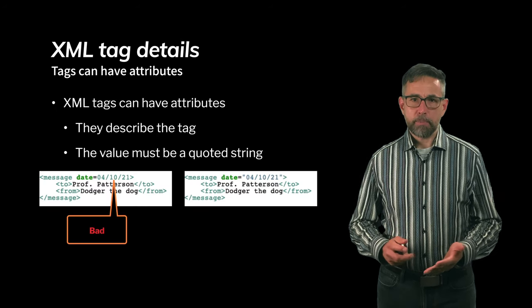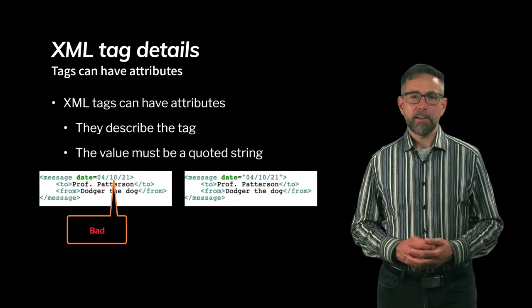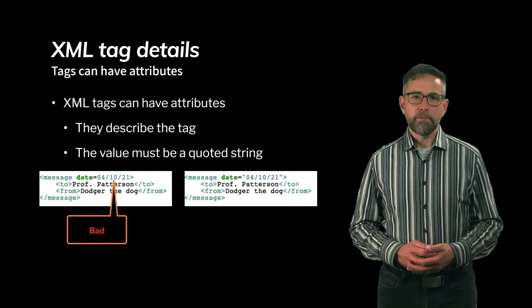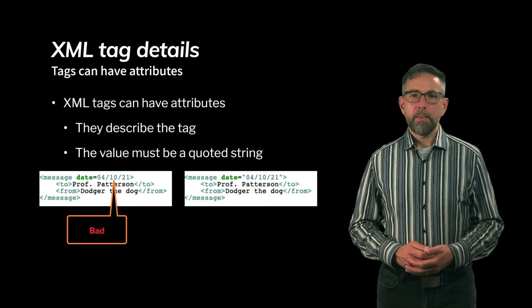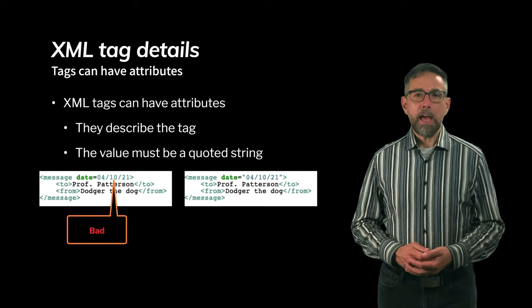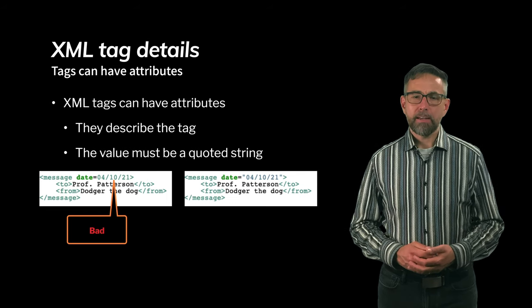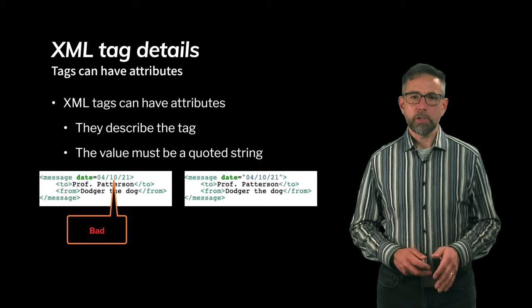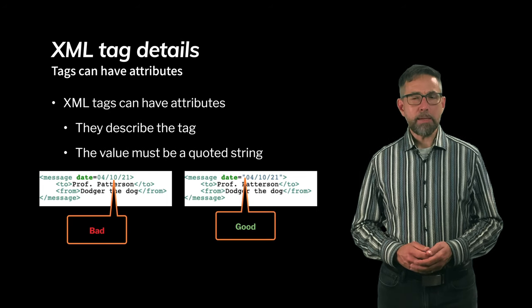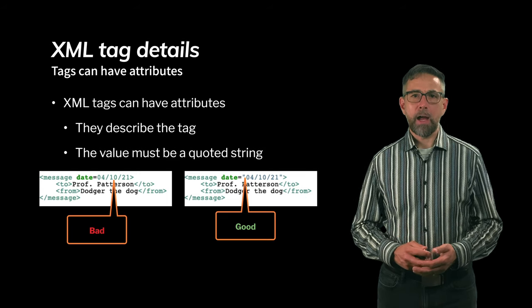Tags can also have attributes — this is additional data within the tag that helps modify, clarify, or expand on the interpretation of the tag. Attributes follow the tag name, must be one continuous word with no spaces, and must be set equal to a quoted string. This first example is bad because although the attribute 'date' is fine, what it's set equal to is not within double quotes. To make it correct, put quotes around the attribute value, which makes it parsable by a well-formed XML parser.